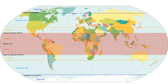The tropics include all the areas on the Earth where the Sun contacts the zenith, a point directly overhead, at least once during the solar year, which is a subsolar point. The tropics are distinguished from the other climatic and biometric regions of Earth, which are the middle latitudes and the polar regions on either side of the equatorial zone.